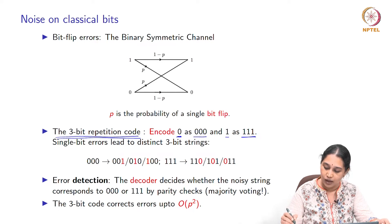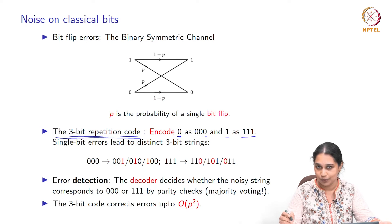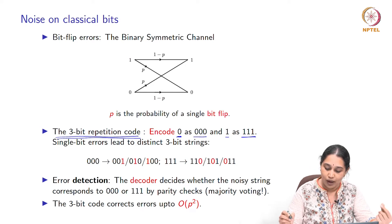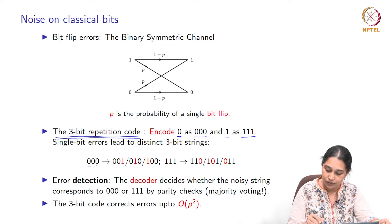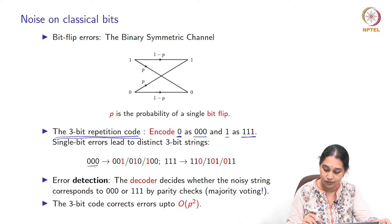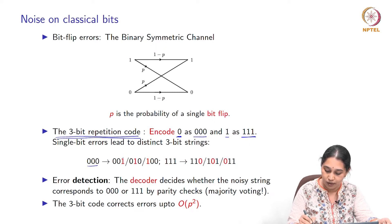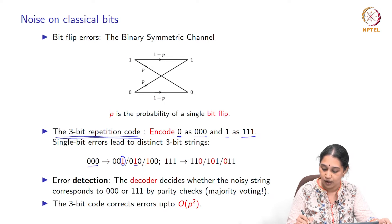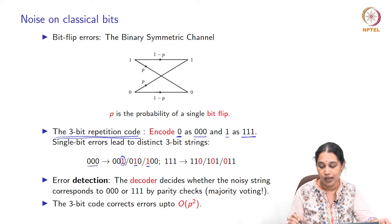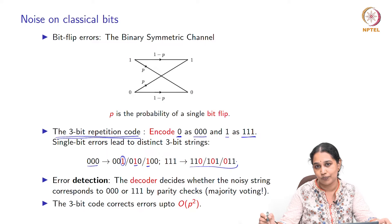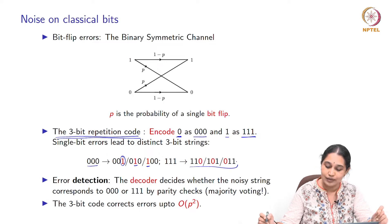If you think about what is the effect of this single bit flip noise — if you have only single bit flip errors — then what can happen to your string of three 0s? Well, it can get transformed into either 0,0,1 where the error occurred on the third bit; or 0,1,0 where the error occurred on the second bit; or 1,0,0 where the error occurred on the first bit. Similarly, 1,1,1 can get transformed to one of these 3-bit strings. Why do I only talk about single bit errors? Because the probability of a single bit flip is p, and since p is typically much smaller than 1, we can typically neglect the higher bit errors.